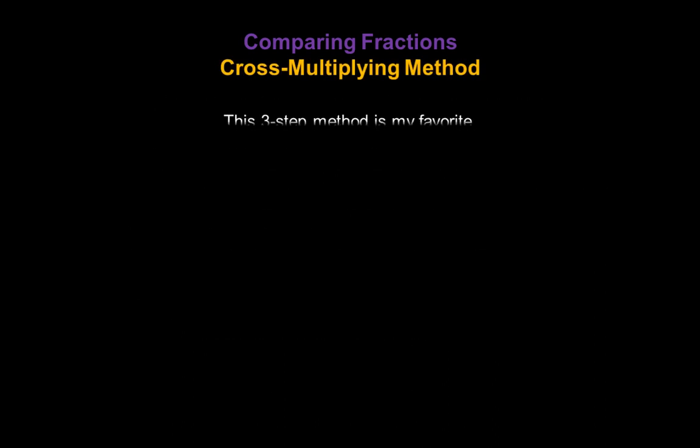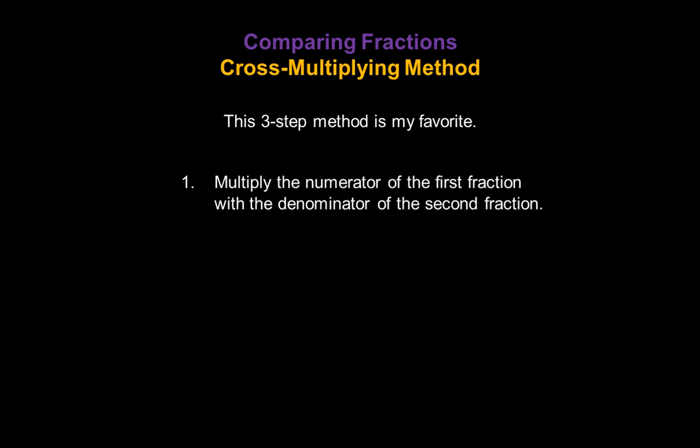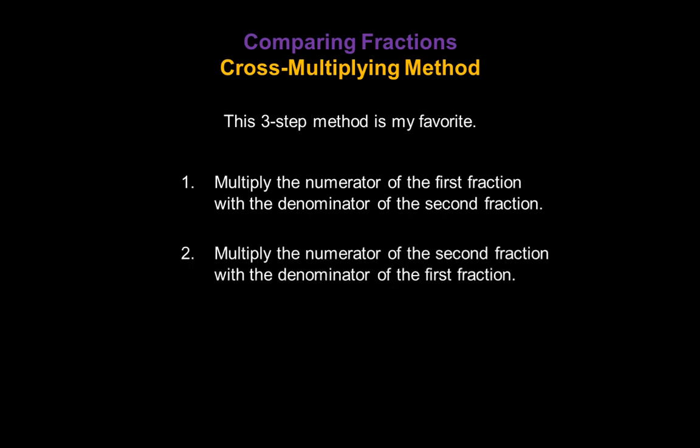Let's start with the cross multiplying method. This is a three-step method and it happens to be my favorite. Step 1: multiply the numerator of the first fraction with the denominator of the second fraction. Step 2 is the opposite: multiply the numerator of the second fraction with the denominator of the first fraction. Step 3: check the products to see which answer is larger.